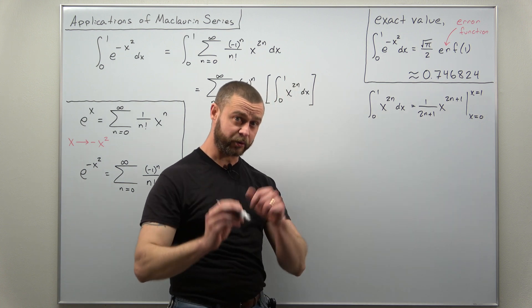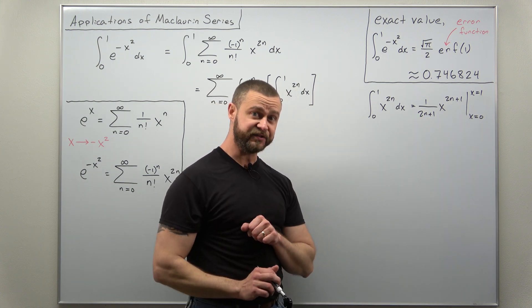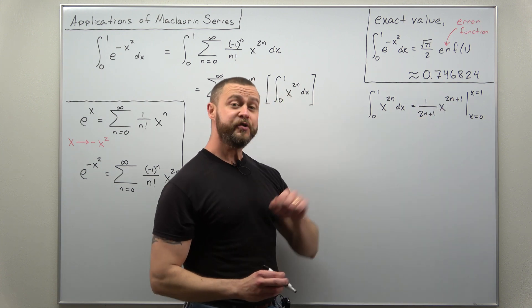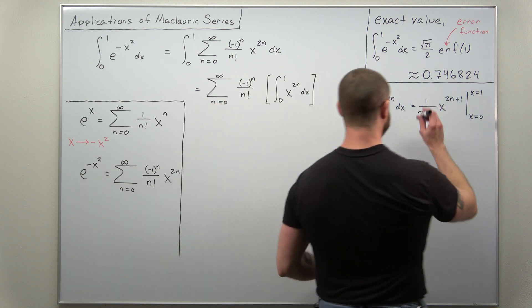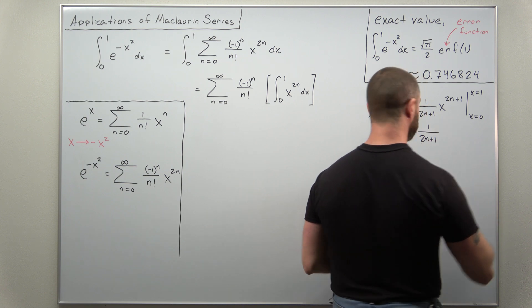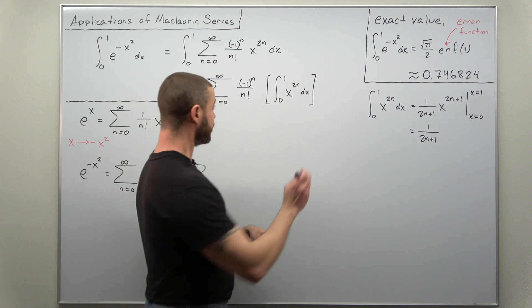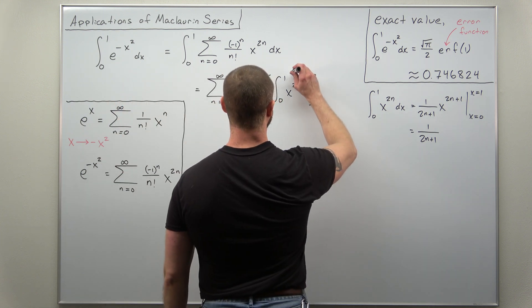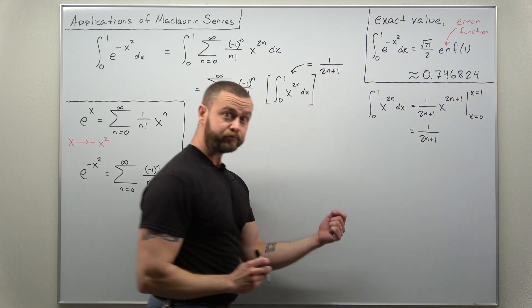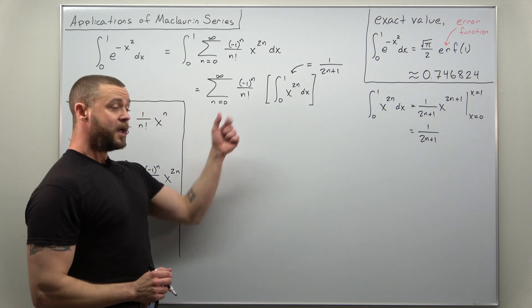And the nice thing about your bounds or limits 0 and 1: plug in x is 0, that evaluates to 0; plug in x is 1, 1 to any power is 1, and what we should be left with here is 1 over 2n plus 1, and that is the value here of the integral.